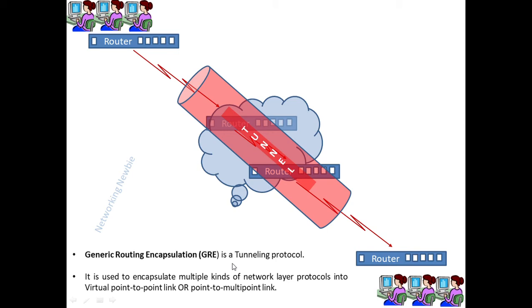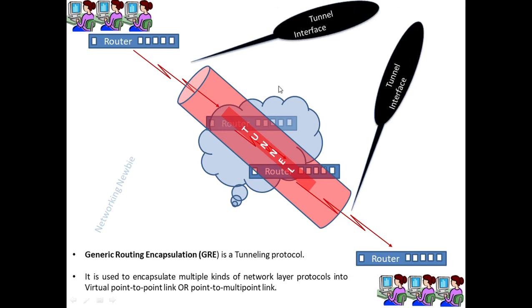GRE is a tunneling protocol and it provides a tunnel through this public network, giving a private passage through which you can send data from one network to the other. This tunnel concept is the basis of the GRE tunneling protocol. This tunnel will have interfaces — we call them tunnel interfaces: tunnel interface one on one side, and tunnel interface two on the other side.